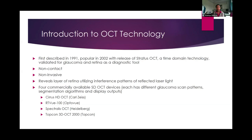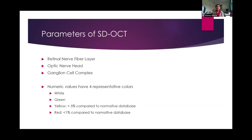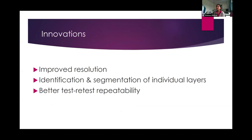The manufacturers include Carl Zeiss, OptiView, Heidelberg, and Topcon. Parameters included are the retinal nerve fiber layer, optic nerve head, and ganglion cell complex. Numerical values have four representative colors: white, green, yellow — meaning less than 5% compared to the normative database — and red, meaning less than 1% compared to the normative database. New innovations include improved resolution, identification and segmentation of individual layers, and better test-retest repeatability.